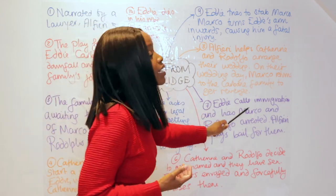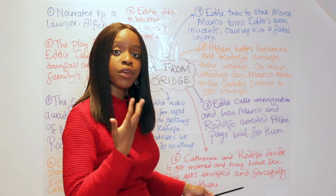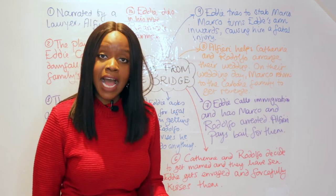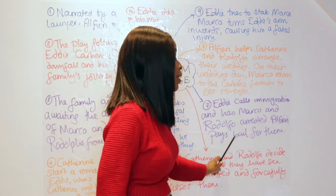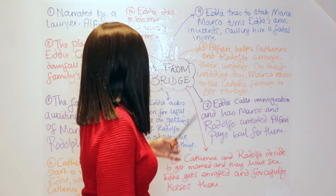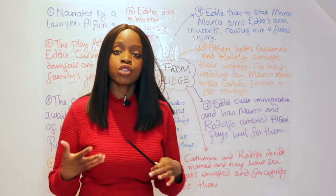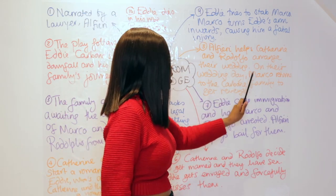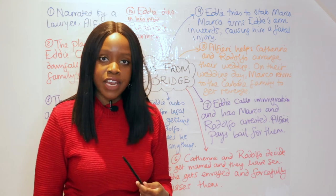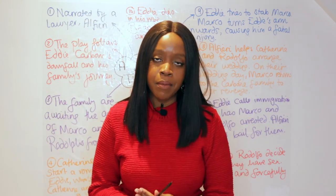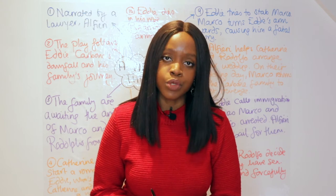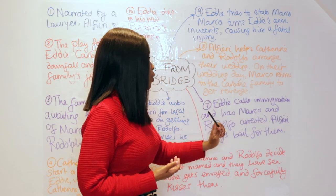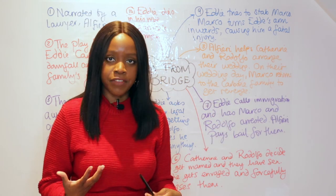Eddie escalates the situation by calling immigration on both Marco and Rodolfo, reporting them and leading to their arrest. Alfieri steps in to pay their bail and get them out of jail. Alfieri then helps Catherine and Rodolfo arrange their marriage. On the wedding day, Marco — enraged by Eddie's betrayal in reporting them to immigration services — returns to the Carbone family seeking revenge.